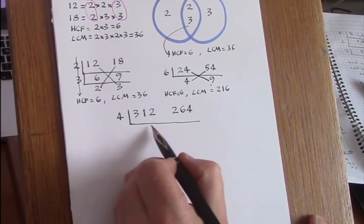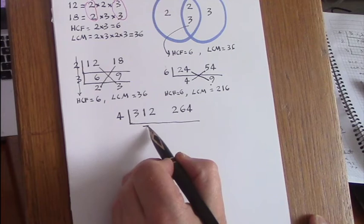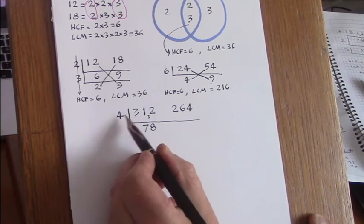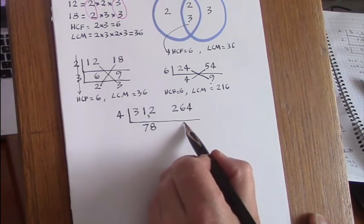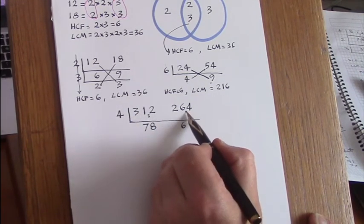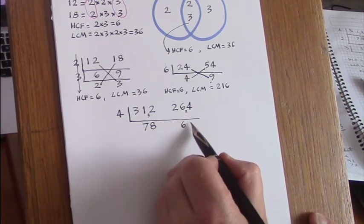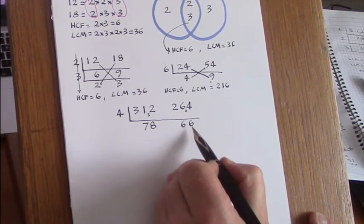So 4 into 312, 4 into 31 goes 7 remainder 3, and 4 into 32 goes 8. 4 into 26 goes 6 times, and 4 into 24 goes 6 times. 66.